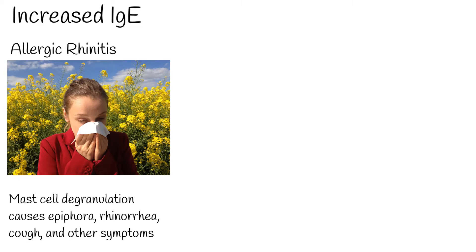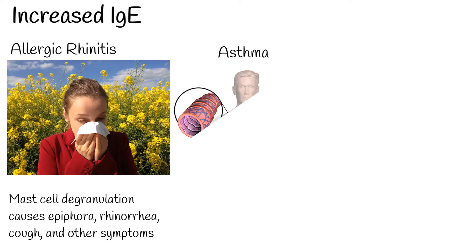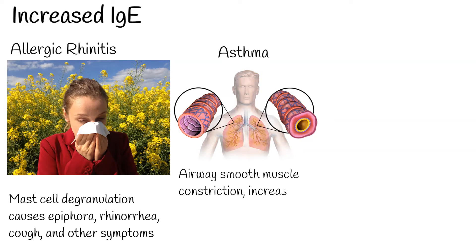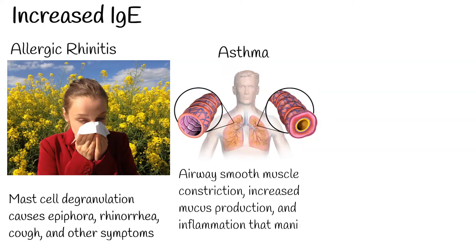Asthma: additionally, the involvement of the lower airway in patients with atopic asthma results in an immune response to aeroallergens, resulting in airway smooth muscle constriction, increased mucus production, and inflammation that manifests as obstructive lung disease.